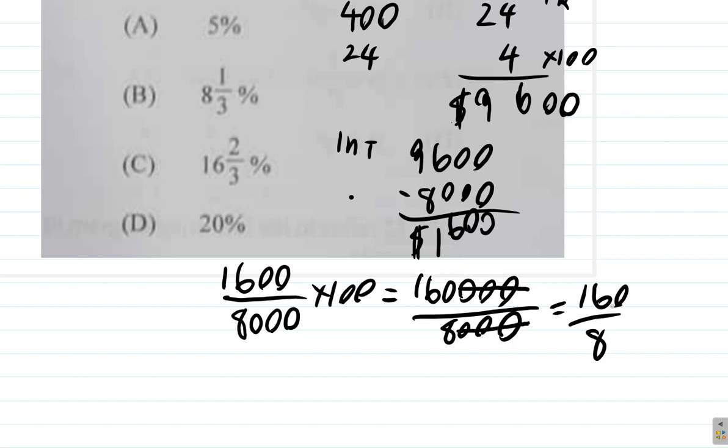So what we have is 160 divided by 8. 160 is the same as 8 by 2. Because 16 is the same as 8 by 2, so 160 is the same as 8 by 2 by 10. When it divides by 8, 8 cancels as 8, so you have 2 times 10, which is 20.